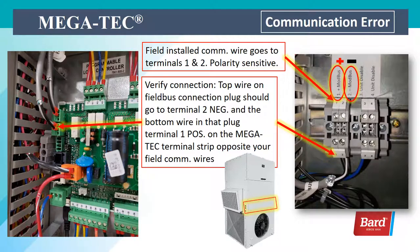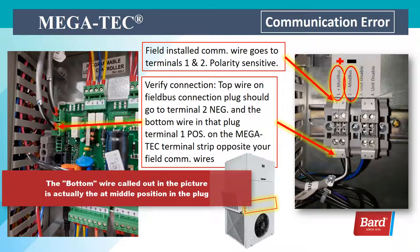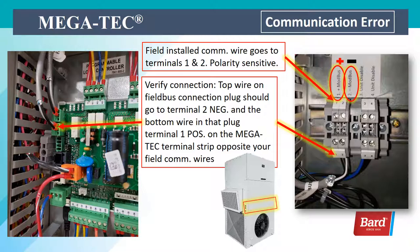If you're working with a Mega Tech unit, the field-installed communication wire goes to terminals 1 and 2 as shown on the right, and these are polarity-sensitive. We need to verify the field bus connection inside the unit: the top wire on the field bus connection plug should go to terminal 2 (negative), and the bottom wire in that plug to terminal 1 (positive) on the Mega Tech terminal strip — opposite your field communication wires. The arrow points down to terminals 1 and 2 where the PLC connects, and at the top of that terminal, 'positive mod bus' and 'negative mod bus' labels indicate where your field wiring connects.